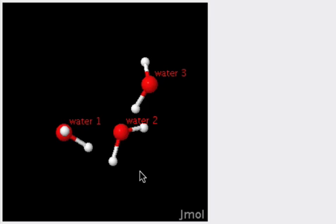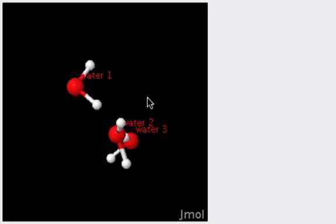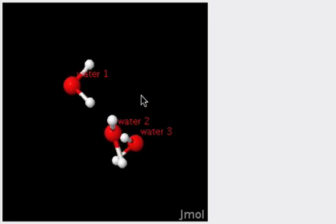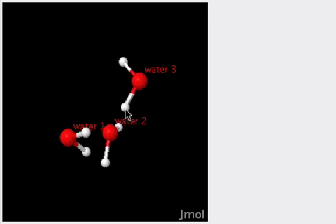However, if we turn the view slightly, what we can see is that this is not an optimal alignment. The lone pair on water 2, which would be extending out somewhere this way, is not well overlapped with the sigma star orbital of water 3's oxygen hydrogen bond.